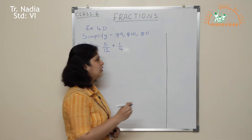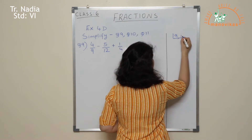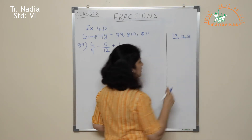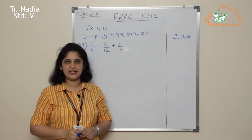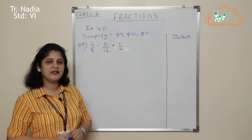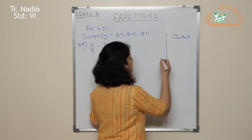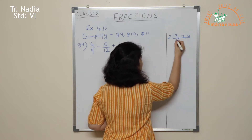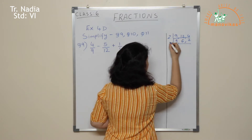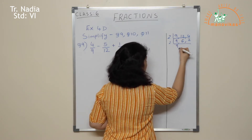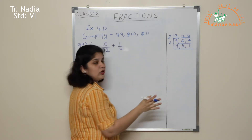In the rough column, write down all three denominators: 9, 12, and 4, and find their LCM. I've told you to use prime numbers. I'll begin with the smallest prime number, 2. Now 9 cannot be divided by 2, so I bring it down. 2 sixes are 12, 2 twos are 4. Once again I take 2: 9 comes down, 2 threes are 6, 2 ones are 2. Now I can no longer use 2.